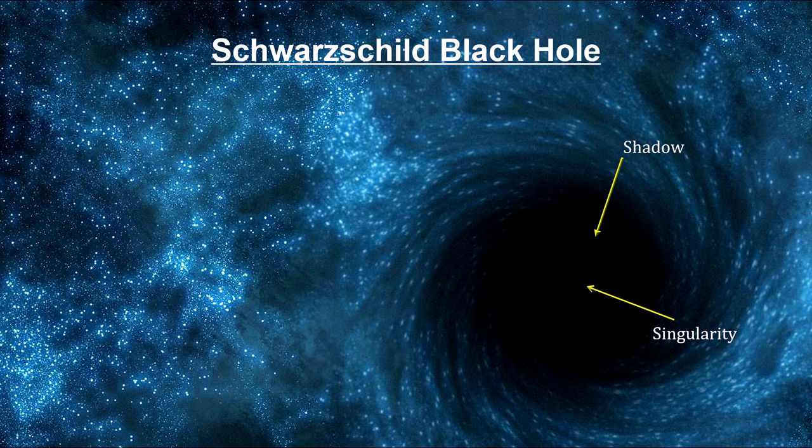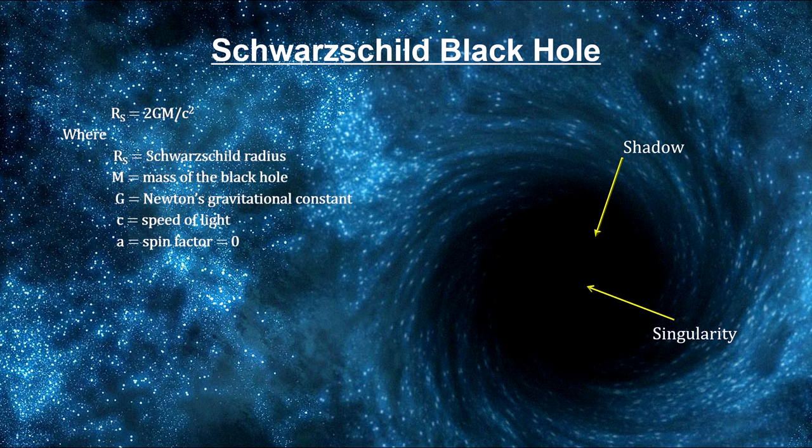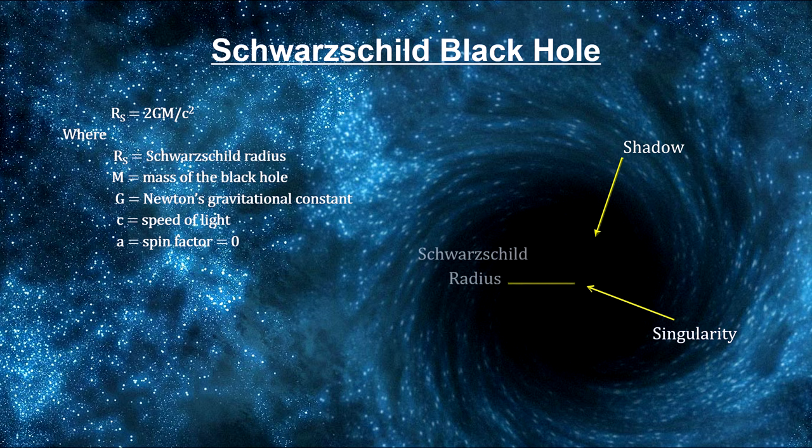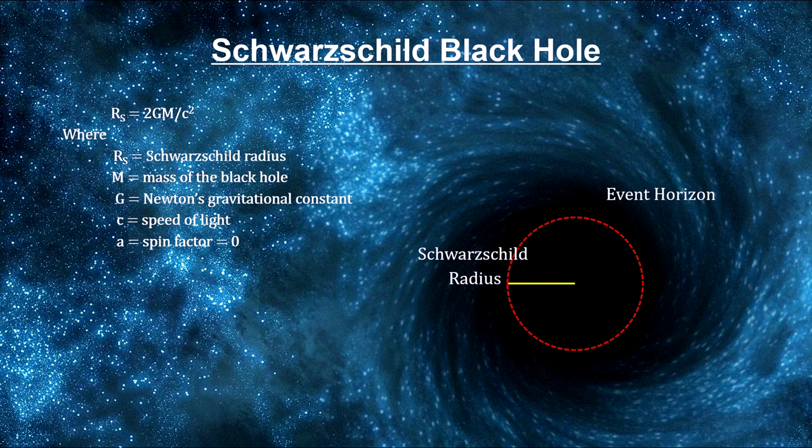In 1916, Carl Schwarzschild, contemporary of Einstein, solved his equation for the special case of a non-rotating sphere. He found that although the diameter of the singularity is zero, the radius at which light would be captured depends entirely on the mass of the black hole. This is called the Schwarzschild radius, and it defines the event horizon.